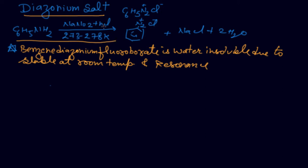We are using NaNO2 with HCl. It will give you HNO2, nitrous acid, and we are getting the product N2Cl. Take care of the temperature, that is 273 to 278 Kelvin. Right now I am getting C6H5N2Cl.